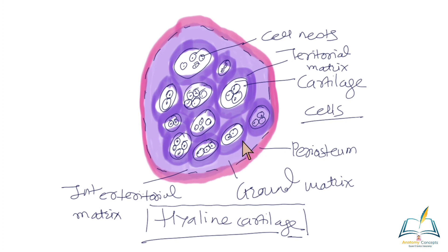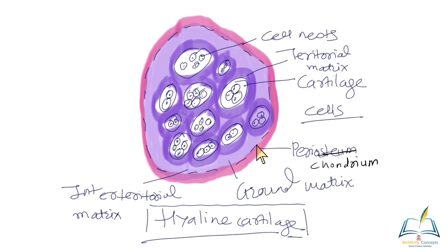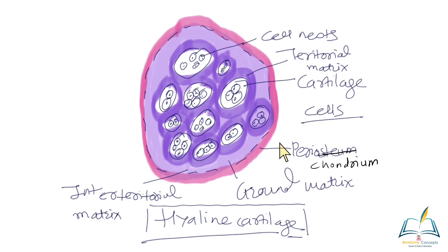Hyaline cartilage is surrounded by a membrane called perichondrium, which is very important for regeneration of the cartilage. The chondrocytes are derived from the chondrogenic cellular layer of the perichondrium, which is the inner layer; the outer is the fibrous layer. Perichondrium is present in almost all types of cartilage except a few: it is absent in articular cartilage and in fibrocartilage. Elastic cartilage also has a perichondrial layer.